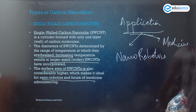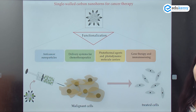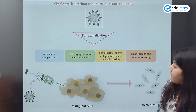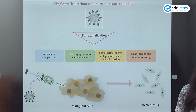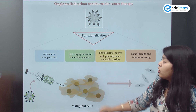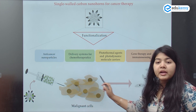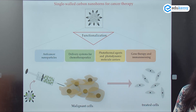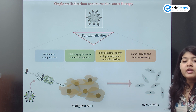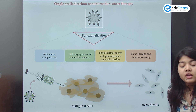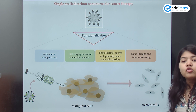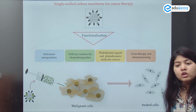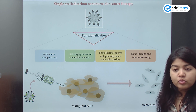Single-walled carbon nanohorns — multiple tubes shaped as nanohorns — are used for cancer therapy using anti-cancer nanoparticles and as a delivery system for chemotherapeutics. They are injected into malignant cancer cells, turning them into treated cells. So carbon nanotubes can be used for cancer therapy, gene therapy, and different medicinal therapies — all true.